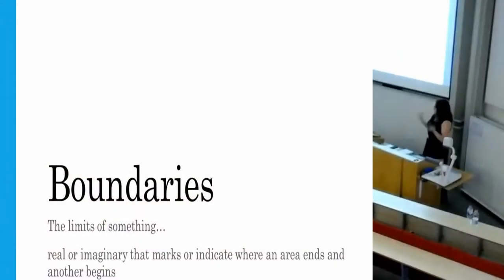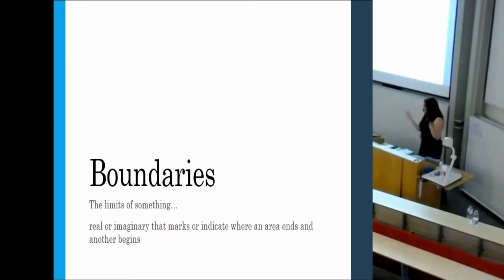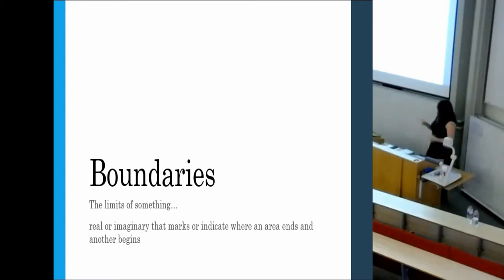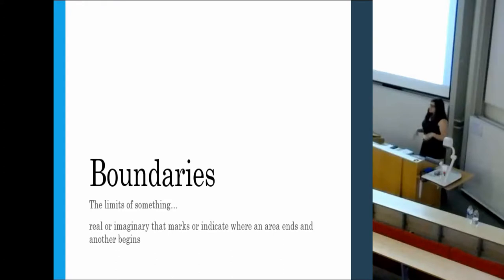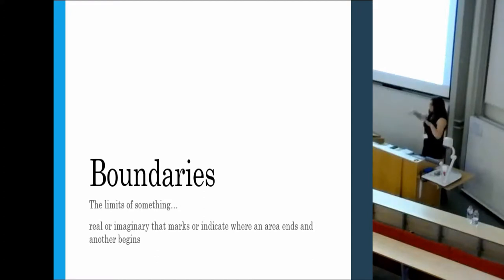A quick definition: if you look in the dictionary, it says that a boundary is the limit of something, which is quite obvious, but it adds that interesting precision that it's real or imaginary and marks where an area ends and another begins. What the dictionary doesn't really go into is that it's pretty much never a neat line — it's very often a gray zone, with two zones fading and overlapping.